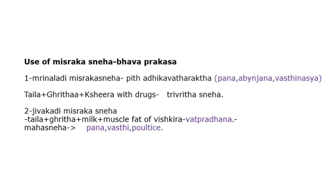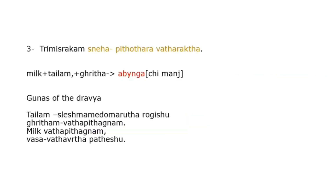It can also be used for Panam, Vasti, and poultices. Three Mishraka Sneha is indicated in Pittottara Madha Rekta. Here, milk is the Sneha-dravya, and Taila and Ghrita — these three are combined and can be used for Abhyanga. The reference is Chigil Samanjari — Keraliya Chigil Samantha.